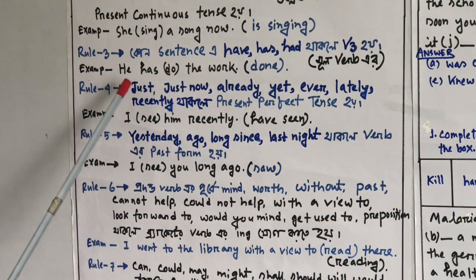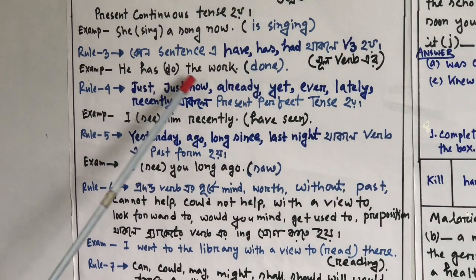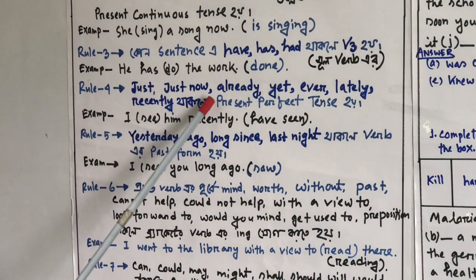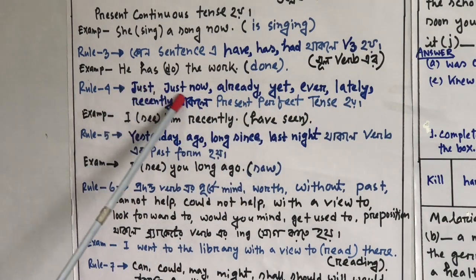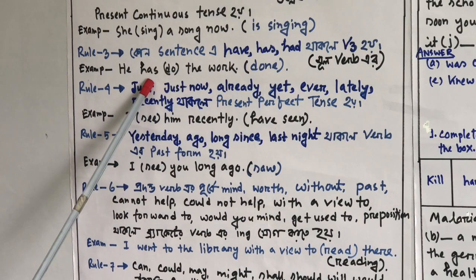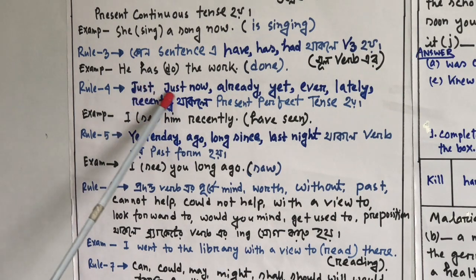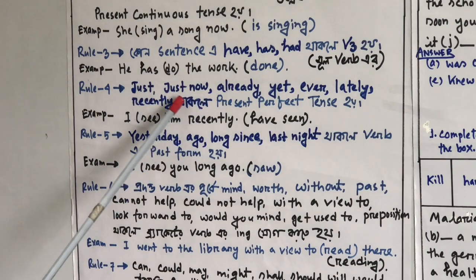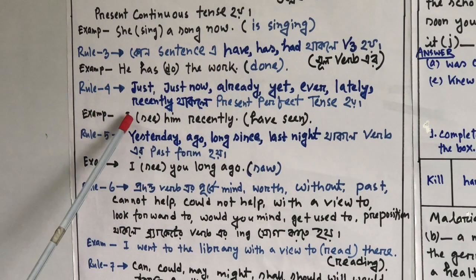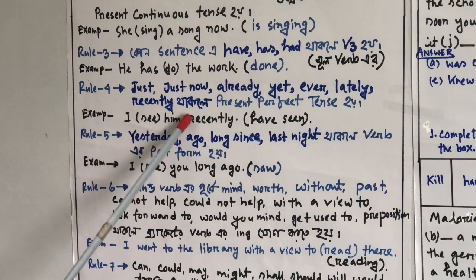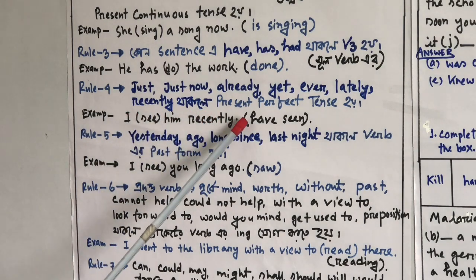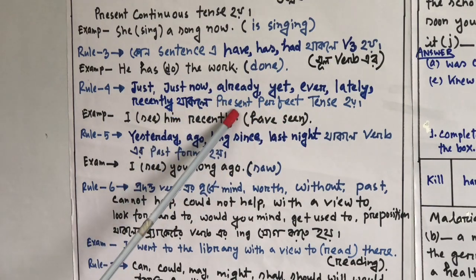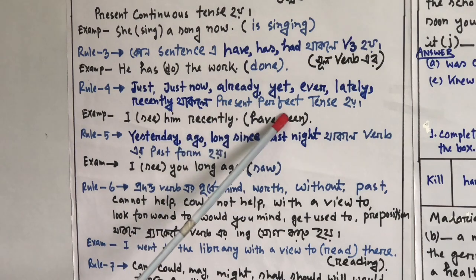Rule 4 — when words like 'just now,' 'already,' 'yet,' 'ever,' 'lately,' or 'recently' are present in a sentence, use the present perfect tense form. Example: 'I see him recently' becomes 'I have seen him recently.'